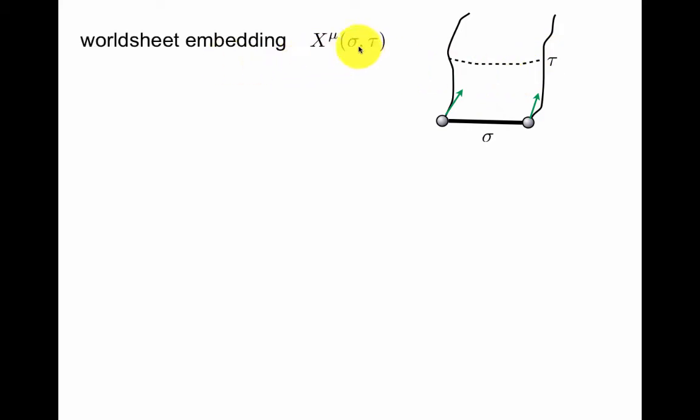And we have an embedding of the worldsheet from sigma-tau to space-time, much like the point particle embedding, but now it depends on two coordinates, sigma and tau.